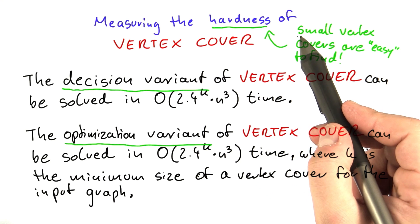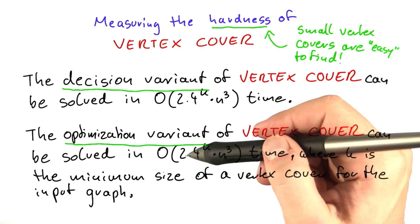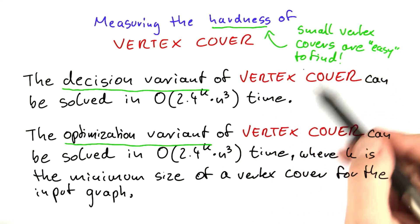This again emphasizes the fact that small vertex covers are easy to find. Even if we don't know that a graph has a small vertex cover, as long as it is small, it will be easy to find.